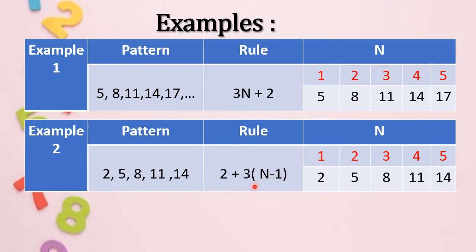Next, following the same rule, 2 plus 3. And here is 2 minus 1. So we will do first the operation inside the parenthesis. So 2 minus 1 is 1, 1 times 3 is 3, plus 2 is 5. The next term here is 5.